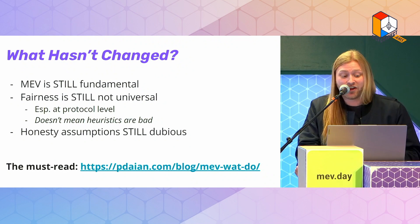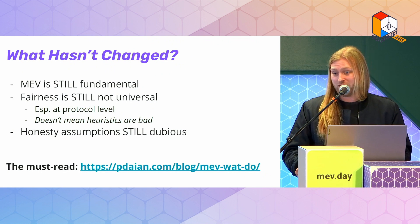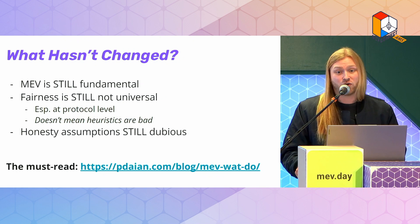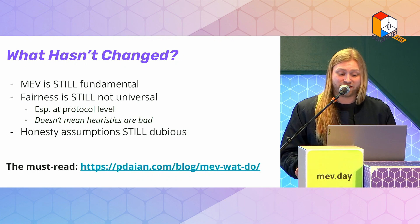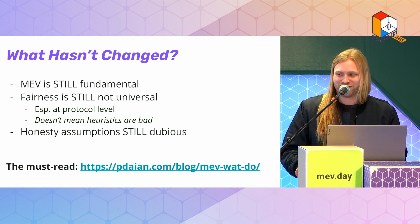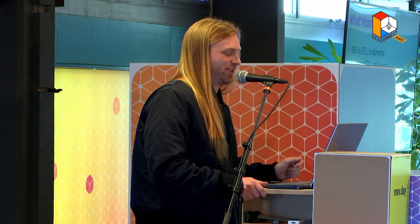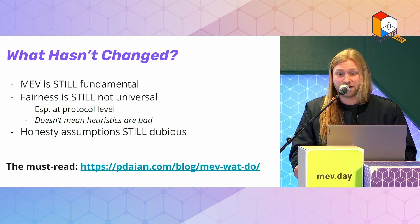What hasn't changed in the past two years? One thing is that MEV has not suddenly become solved or disappeared. MEV is still fundamental — even with the existence of transaction fees, it's going to go beyond that with other sources. The other thing that hasn't changed is fairness is still not universal. You show me one person that thinks the protocol is fair and I'll show you another person that doesn't. This does not mean that heuristics aren't useful — clearly sandwiching is much less fair — but especially at the protocol level as opposed to the application level, a universal definition of fairness is going to continue to be hard to reach.